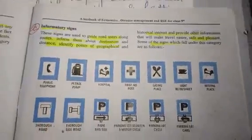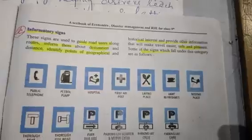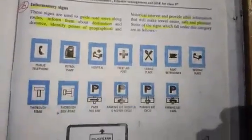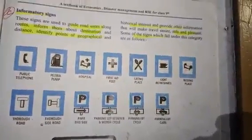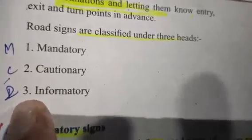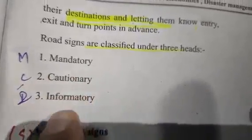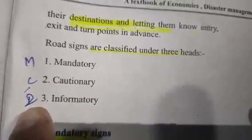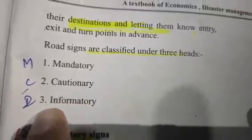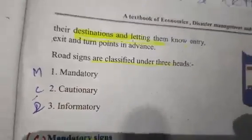Dear students, today we discussed traffic lights, pedestrian crossings, and road signs — including the types of road signs. To help remember, use the acronym MCI: Mandatory, Cautionary, and Informatory — just like MCI stands for Medical Council of India, use MCI to remember the three types of road signs.